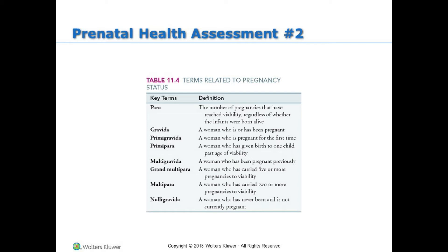Multigravida, a woman who has been pregnant previously. Grand multipara, a woman who has carried five or more pregnancies to viability. Multipara, a woman who has carried two or more pregnancies to viability. Nulligravida, a woman who has never been and is not currently pregnant.